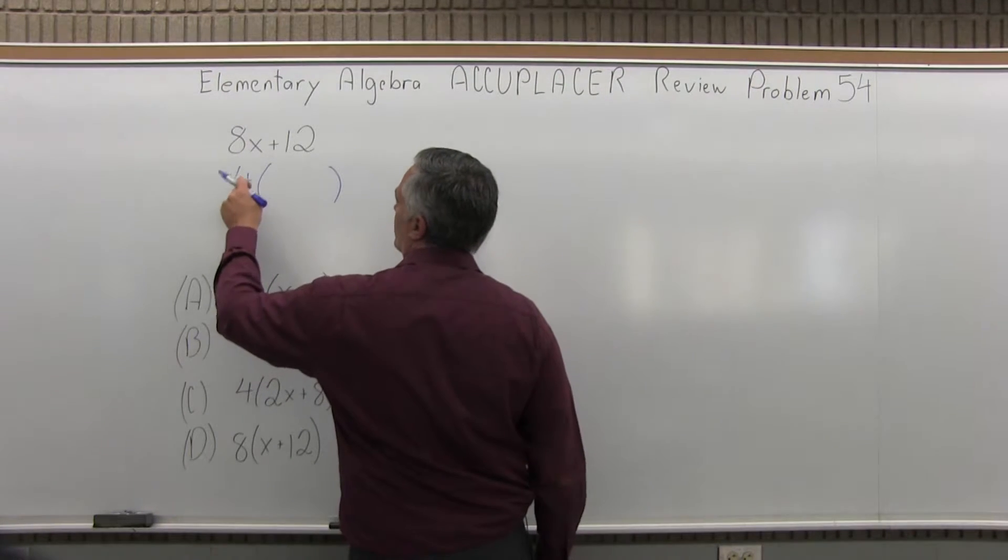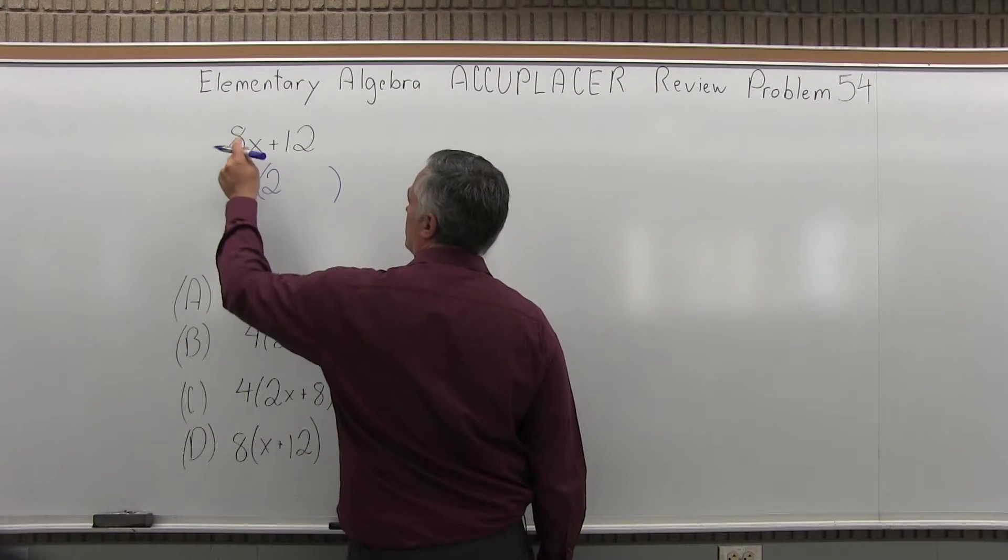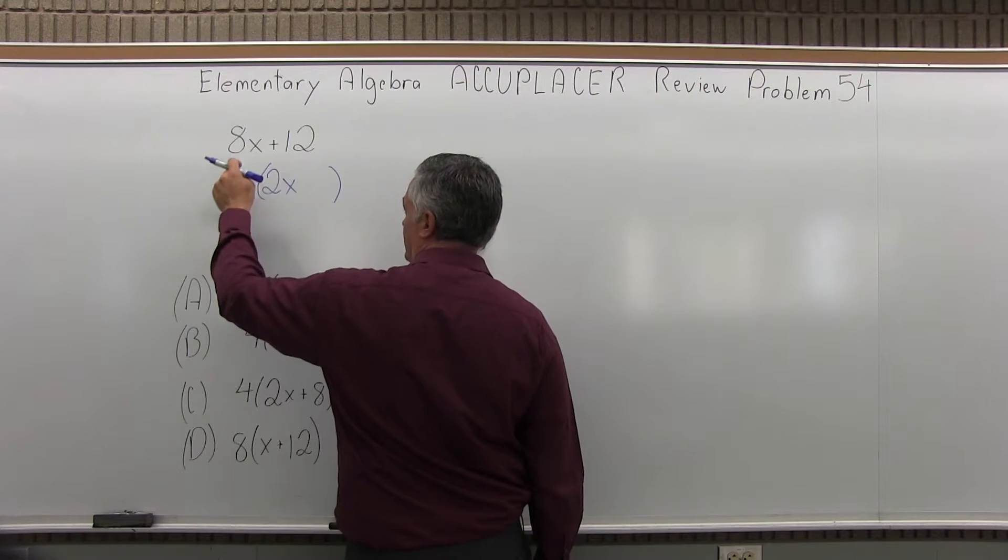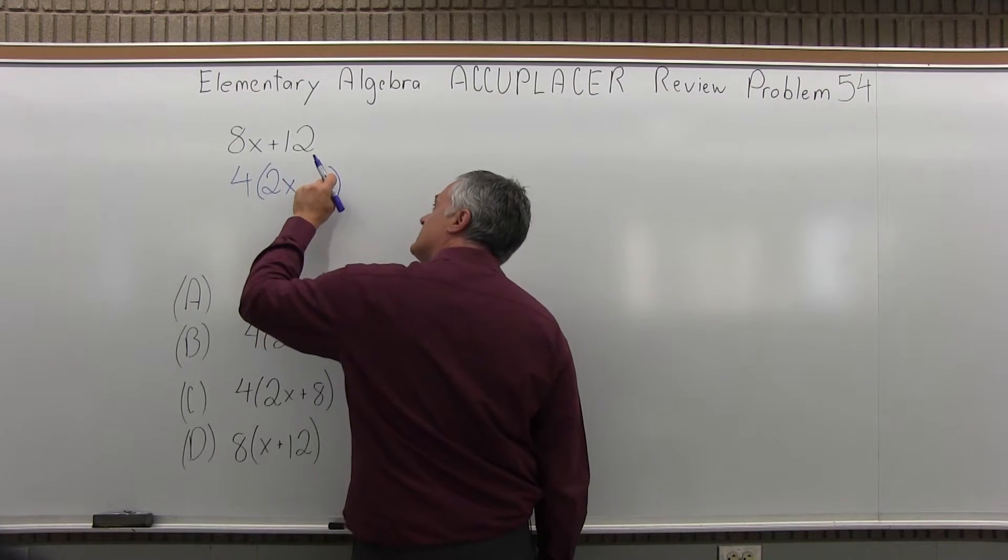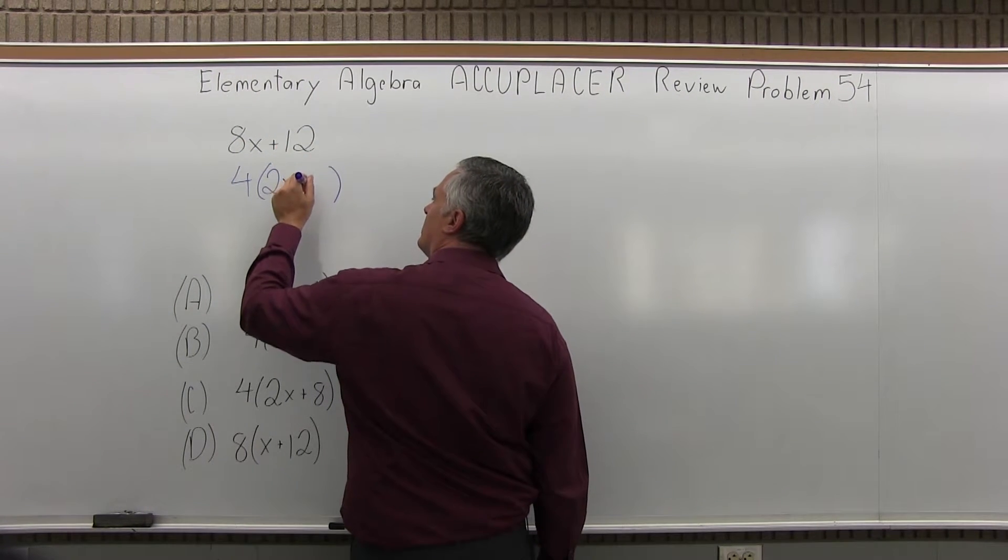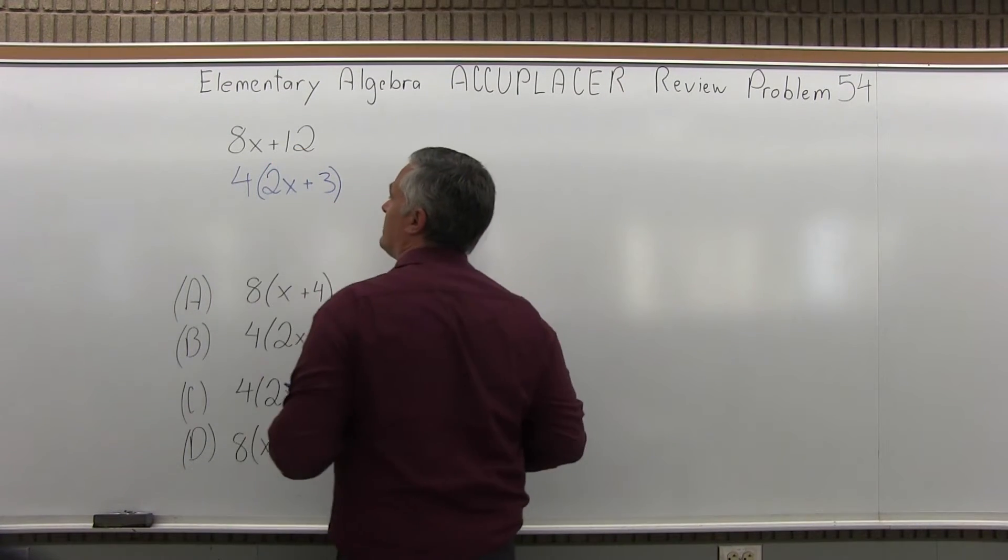So in the parentheses, 4 times what gives me 8x? Well, 4 times 2 gives me the 8 but don't forget I need the x. So 4 times 2x would make an 8x, and then 4 times something would make a positive 12. Well, it would have to be 4 times 3. 4 times 3 does multiply to be 12.